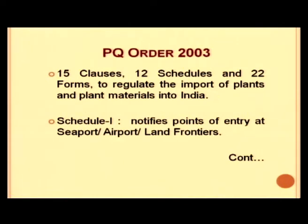The PQ Order 2003 has 15 clauses, 12 schedules, and 22 forms, which are the important documents and mechanisms explaining how to regulate the import of plants and plant materials into India.